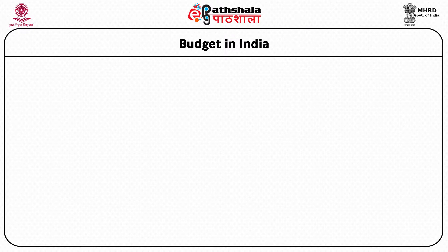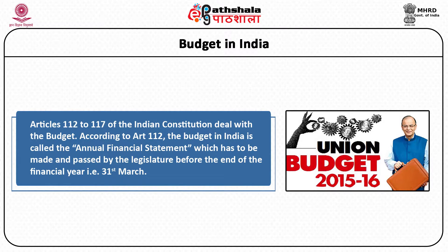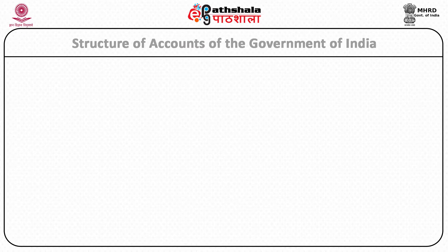Budget in India: Articles 112 to 117 of the Indian Constitution deal with the budget. According to Article 112, the budget in India is called the Annual Financial Statement, which has to be made and passed by the legislature before the end of the financial year, that is 31st March. Structure of accounts: there are three funds for all the government transactions, known as the Consolidated Fund of India, the Contingency Fund of India, and the Public Account.